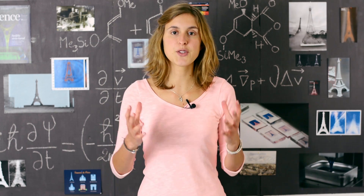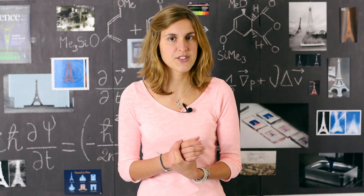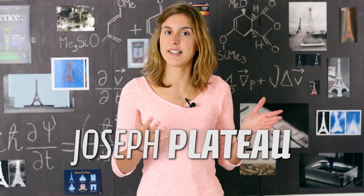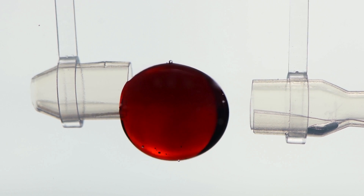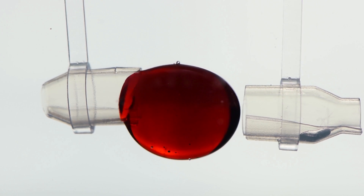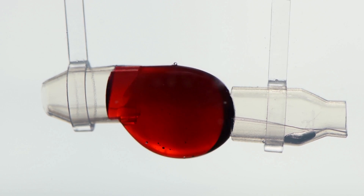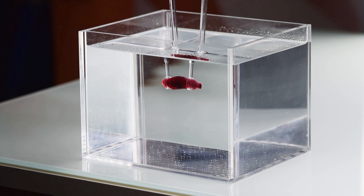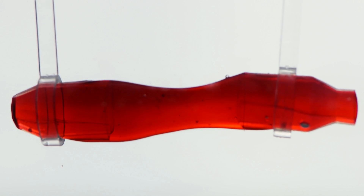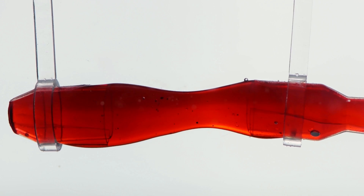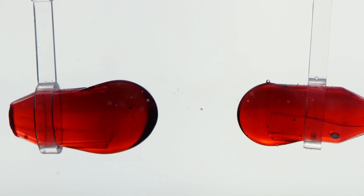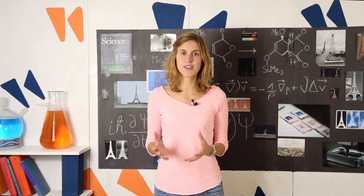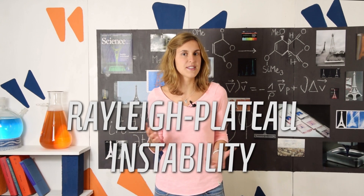This experiment was first performed by Belgian physicist Joseph Plateau in the mid-19th century. But he didn't stop there. Plateau wanted to see what happened if he deformed the drop by pulling on it to create a cylinder. As soon as the surface of the cylinder becomes bigger than the surface of two spheres, the drop is split in two. This is what we call the Rayleigh-Plateau instability.